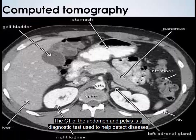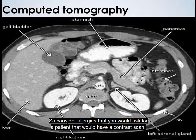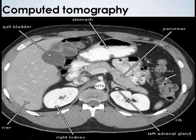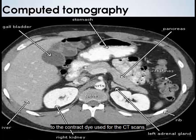A CT of the abdomen and pelvis is a diagnostic test used to help detect diseases of the small bowel, colon, and internal organs, and to determine the cause of unexplained pain. Consider allergies when ordering a contrast scan — allergies to iodine or seafood can cause a cross-allergic reaction to the contrast dye used for CT scans.